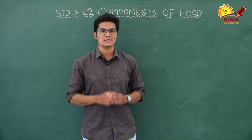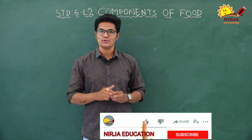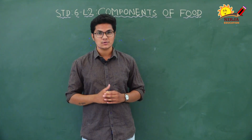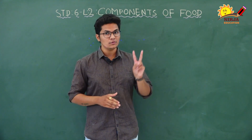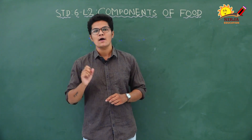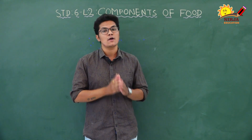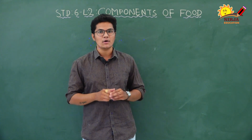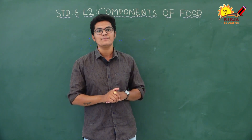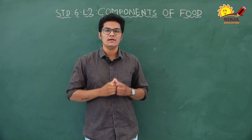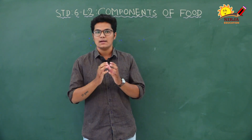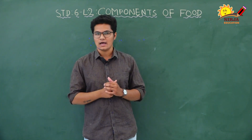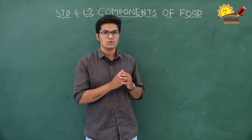Hello everyone, welcome to NHI Education. This is the second video of Lesson 2: Components of Food for Class 6. In the previous video we learned about nutrients. Nutrients are of two types: macronutrients and micronutrients. In addition, water and roughage are also essential for our health. Macronutrients include carbohydrates, proteins, and fats — those which our body needs in bulk. Micronutrients are those needed in traces.